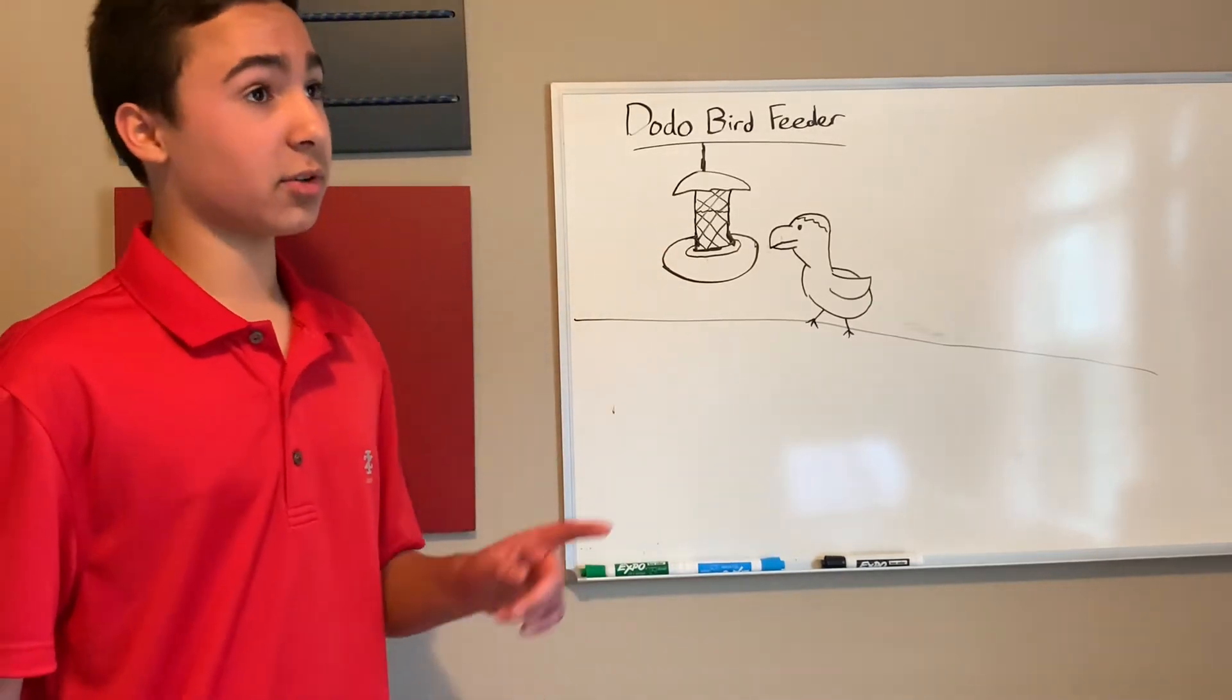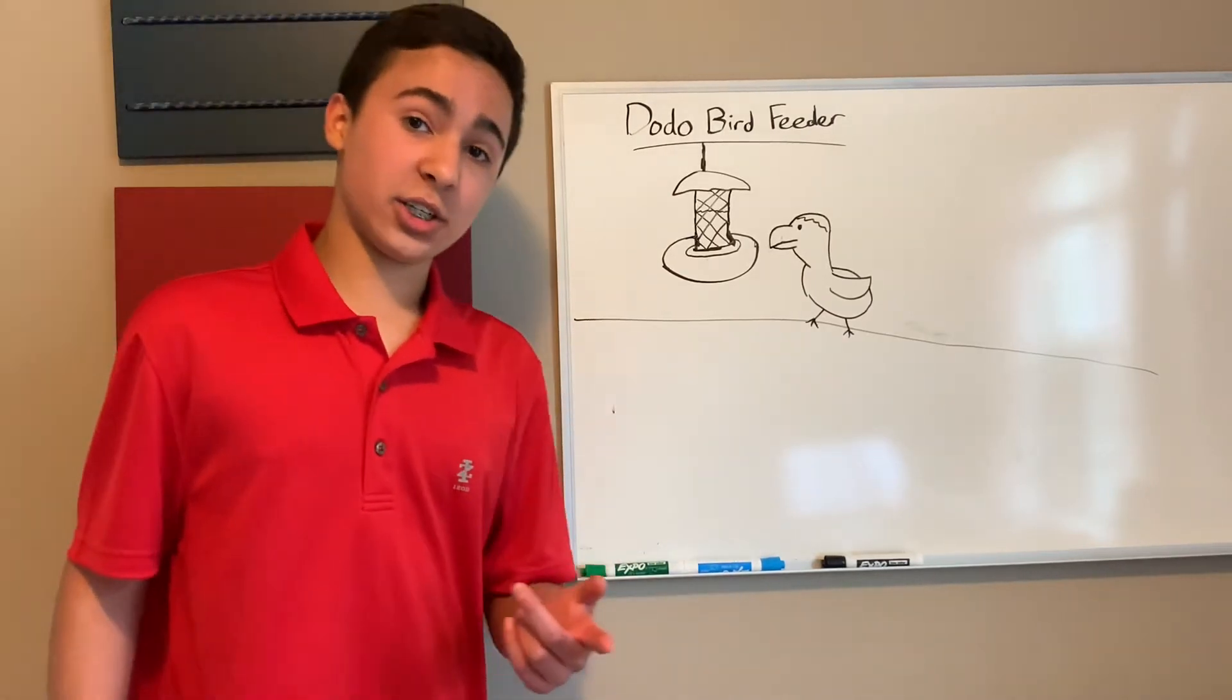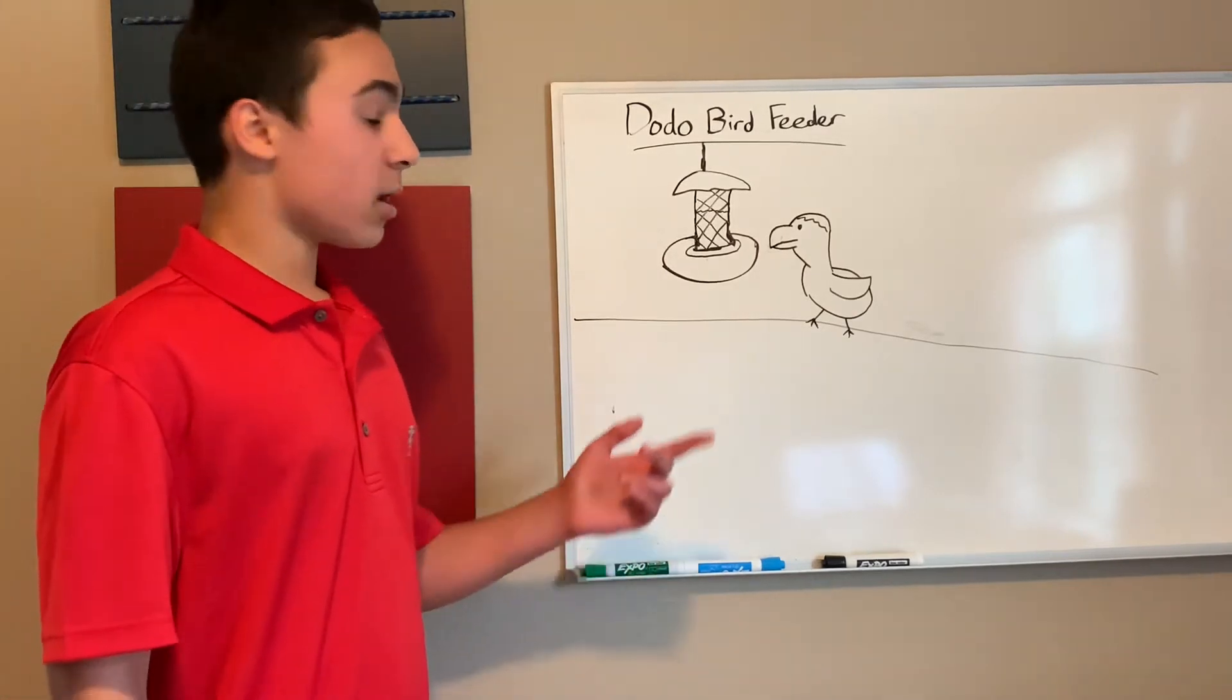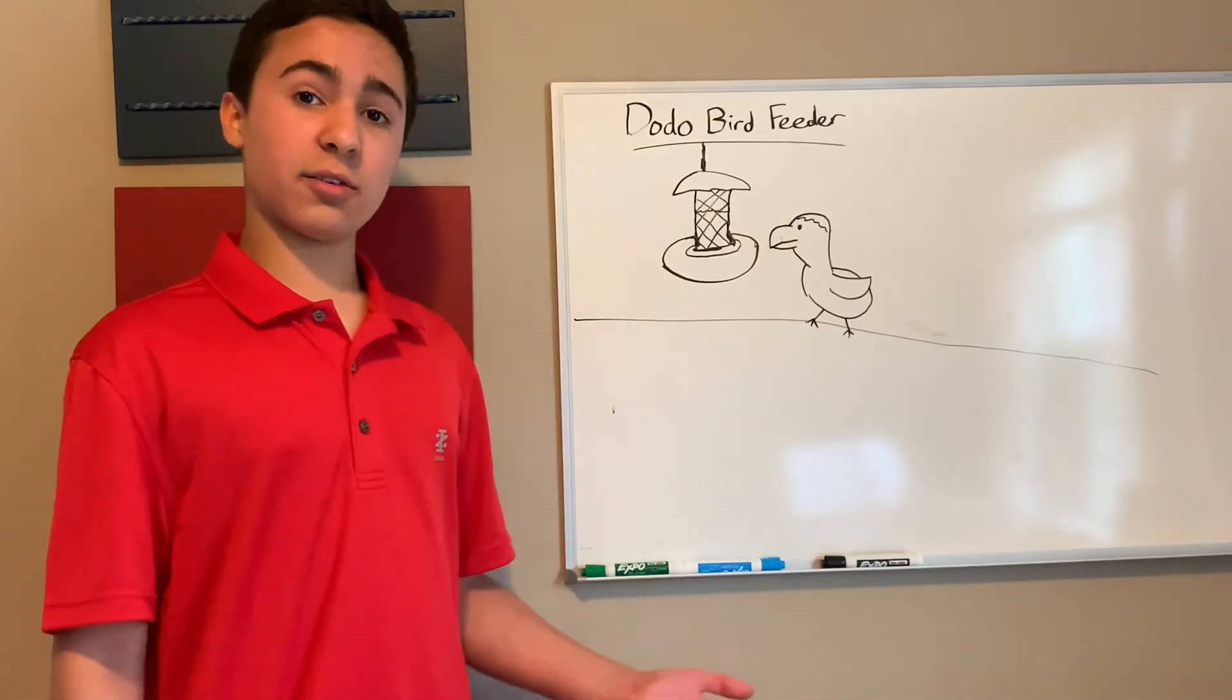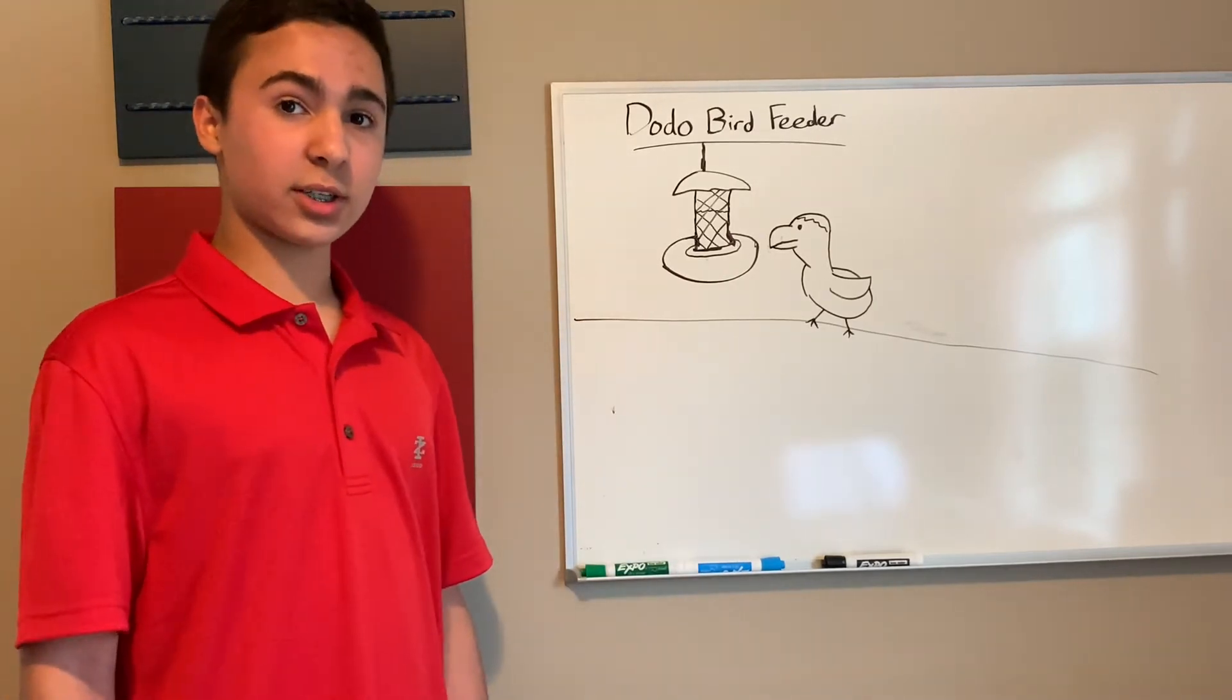Here in this diagram, we have a dodo bird coming to check out the dodo bird feeder. Note that dodo birds are flightless animals, so if you hang it too high in a tree, then they won't be able to get it. Our recommendation is you place it on a low-hanging branch or close to the ground where they can reach it. Dodo birds love beans. It's their favorite food.